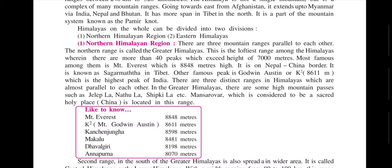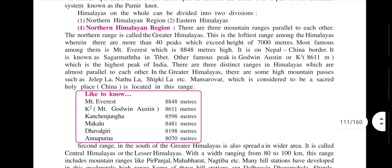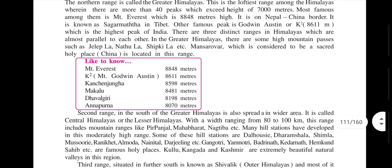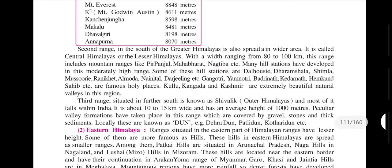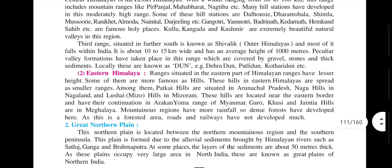In the Greater Himalayas there are mountain passes such as Jalapala, Athula, and Shikila. The Mansarovar is an open area located in China. The second range — the Central or Lesser Himalayas — has a width of 80 to 100 km and includes famous hill stations such as Dalhouzie and Dharamshala.